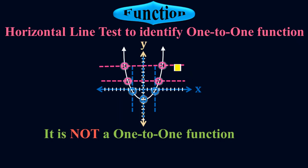Both horizontal lines pass through two points on the graph — this one here and then all the way to touch it here, and similarly this one touches it here and then on the other side as well. So it does not satisfy the horizontal line test — it failed the horizontal line test. Therefore it is not a one-to-one function.